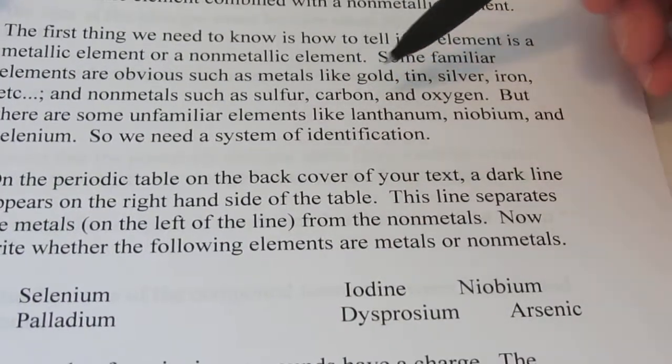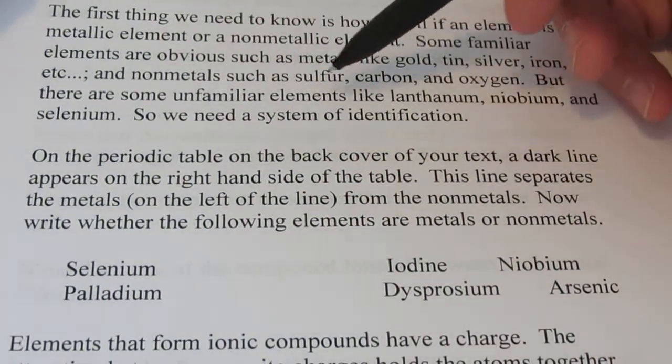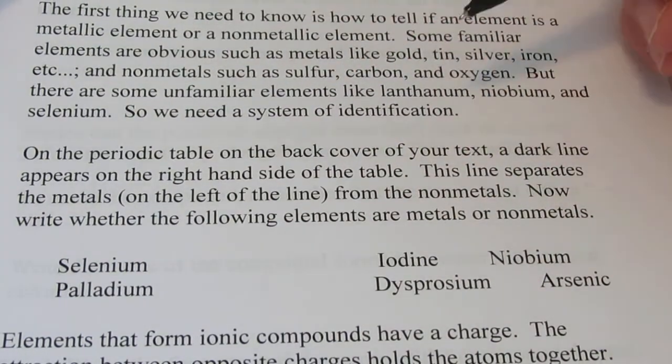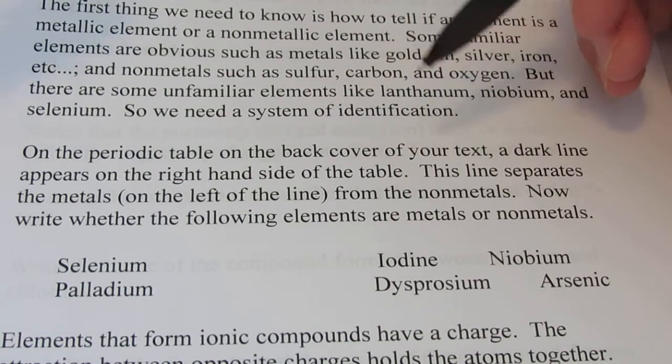And non-metals such as sulfur, carbon, and oxygen. You know that those are non-metals. But there are some unfamiliar elements like lanthanum, niobium, and selenium. So we need a system to identify what our metals are and what our non-metals are.